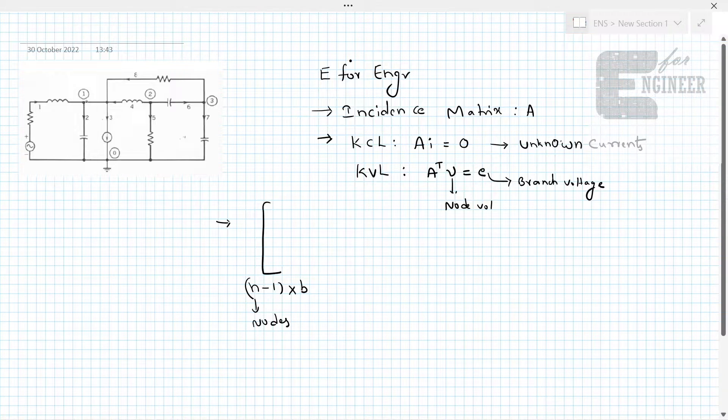Here if we see this is node 1, node 2, node 3 and node 0. For writing this incident matrix, we consider only the 1, 2 and 3 nodes. We won't consider this 0th node as this is reference node. If we consider this 0th node in the incident matrix, then it is called augmented incident matrix.